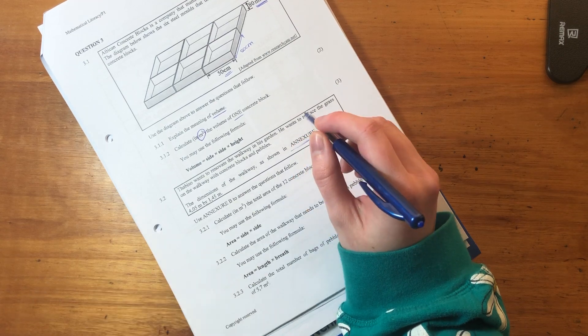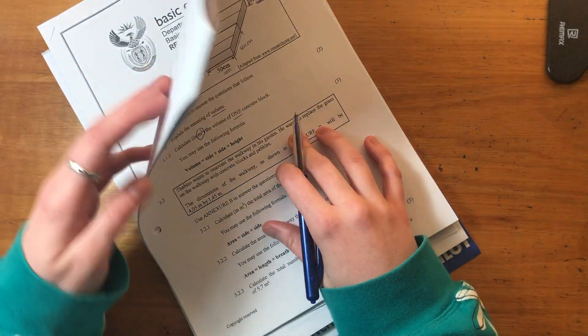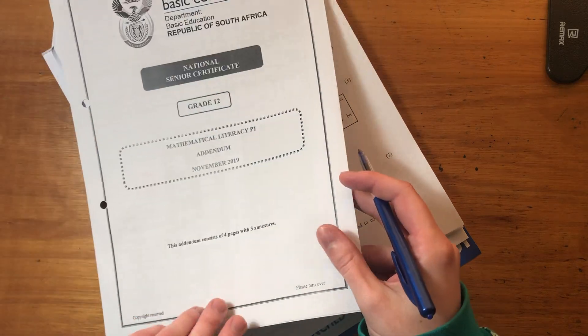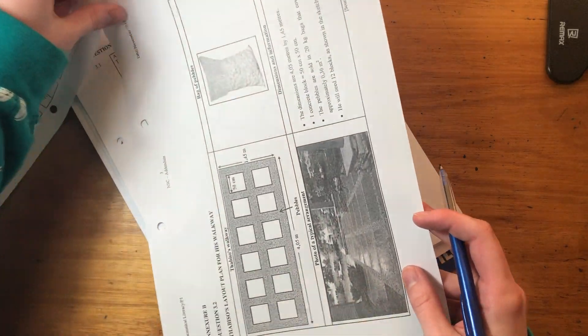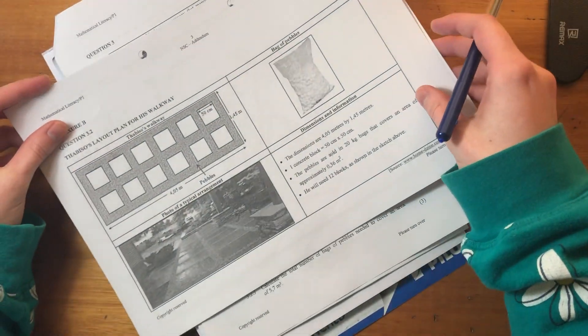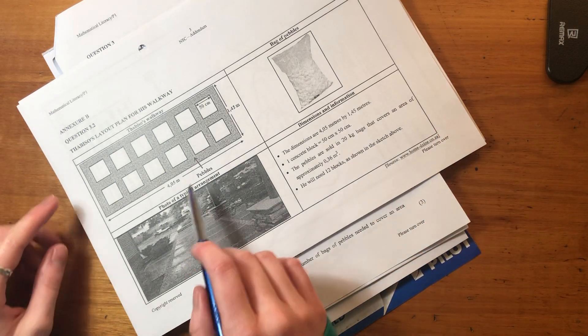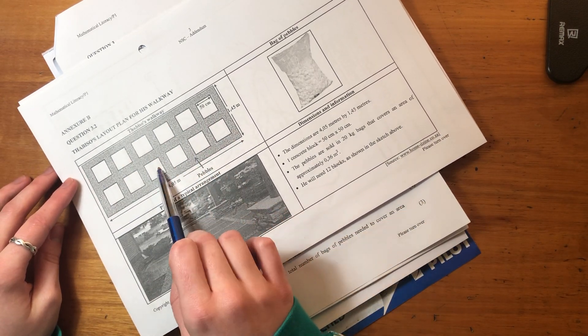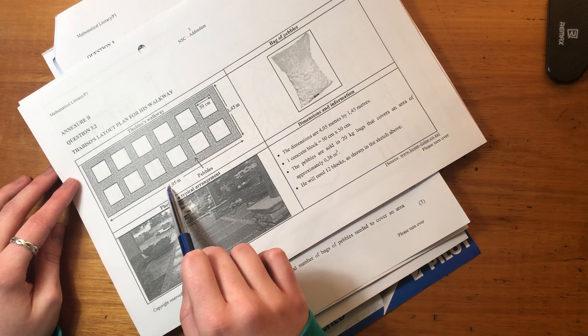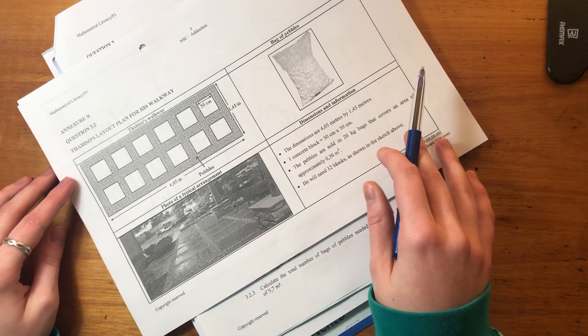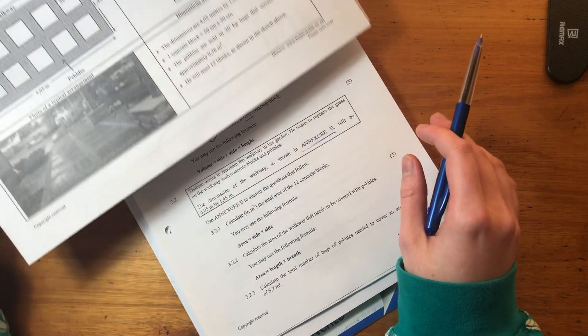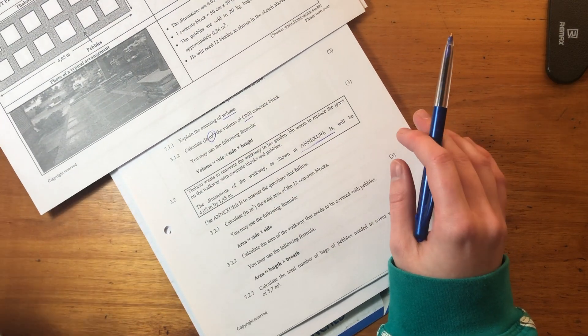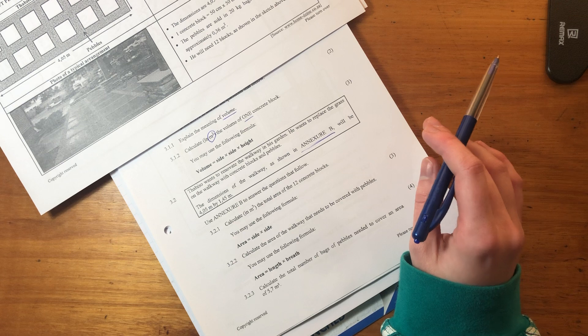So now we know that we're back with our addendum. Let's see if I can find the addendum. Here we go. We know that we are looking at these guys. There we go. We see the walkway. We see that there's these little tiles and then there's pebbles in between and we see the different dimensions. So let's just jump into the questions and see what needs to be done.